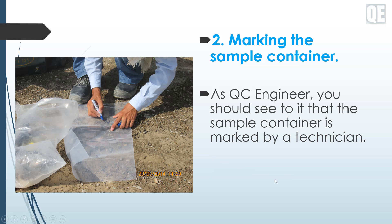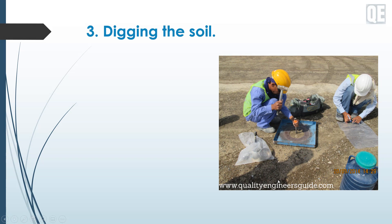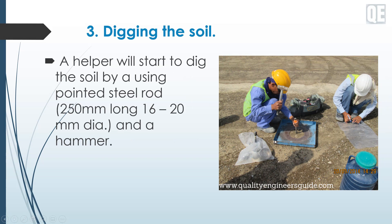Number three: digging the soil. A helper will start to dig the soil using a pointed steel rod — 250 mm long, 16 to 20 mm diameter — and a hammer. The head of the rod shall be struck at slow speed and at controlled pressure. Use gloves for hand protection to prevent hand injury.